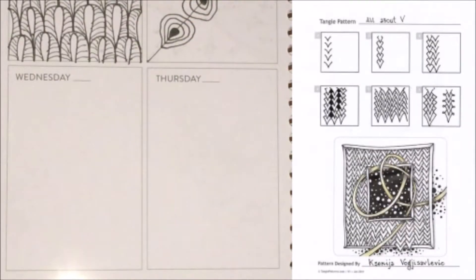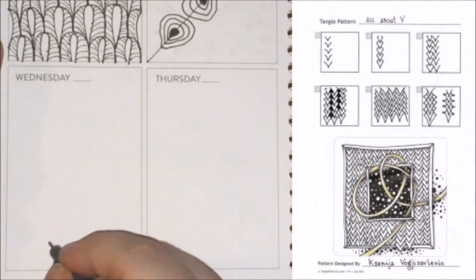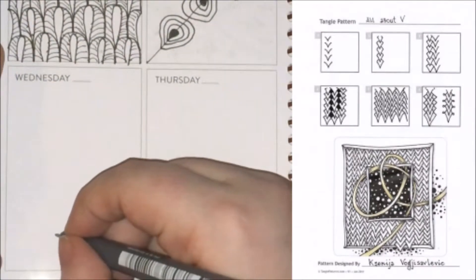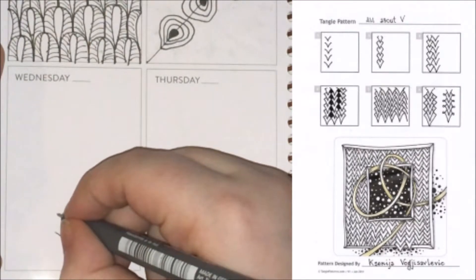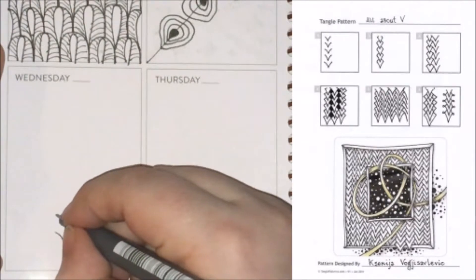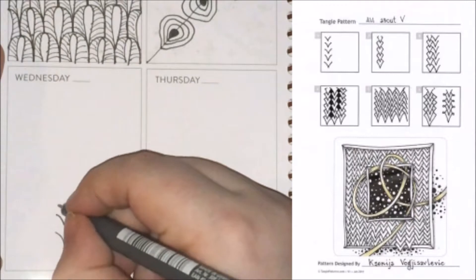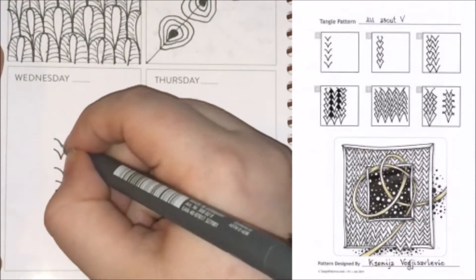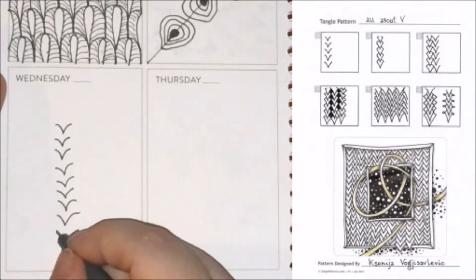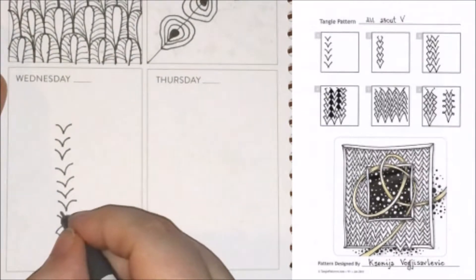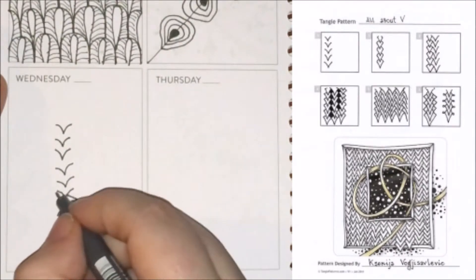The third tangle I have for you all today is called All About V by Ksenia Volhi-Savlevic. And the way that you're going to do this one, it's a chain and it can be done entirely across whatever space you're working in. I'm only going to do one iteration of it for conservation of time. But the way you approach this one is you create some V shapes. And you want them to have a slight curve to them. And then once you have enough Vs, you're going to come across and make this parenthetical shape that crosses over the V up above.